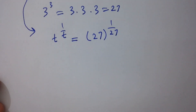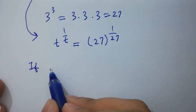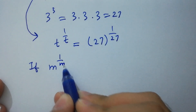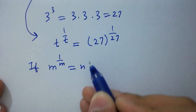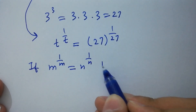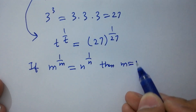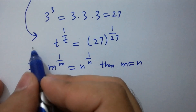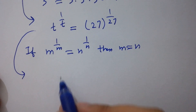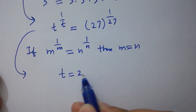So if m to the power 1 over m equals n to the power 1 over n, then m equals n. Therefore we have the value of t which is 27.